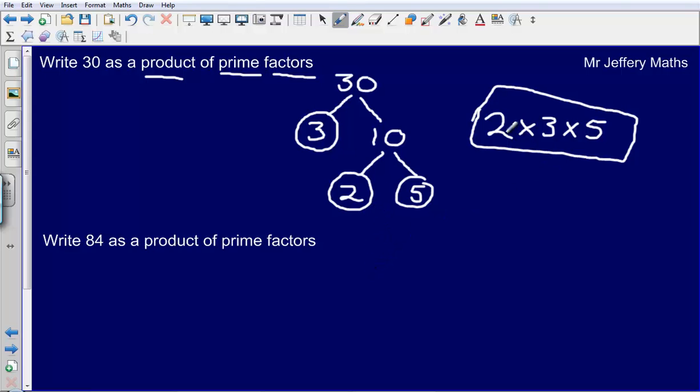So what prime numbers can I multiply together to make 30? I can multiply 2, 3 and 5 together. I can check that my answer is correct by actually doing this sum. If I just do this very quickly, it should give me an answer of 30. So 2 times by 3 gives me 6, multiplied by 5 gives me 30.